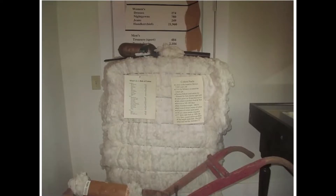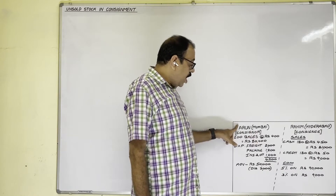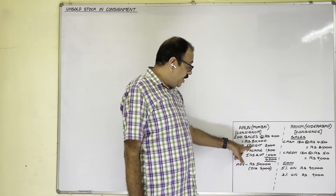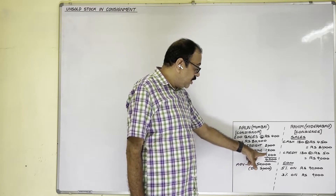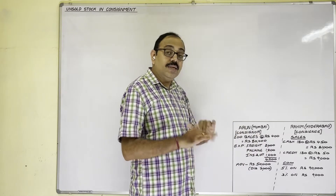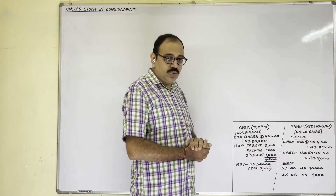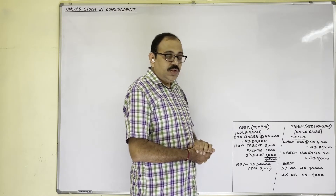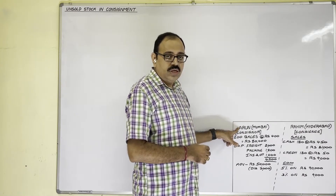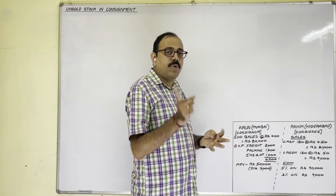A cotton bale means a large bundle or package prepared for shipping, storage, or sale — tightly compressed and secured by wires. One bale equals 2.18 quintals. To send these goods, Arun incurred: freight 2000 rupees, packing 1200, insurance and other expenses 1000 — total 4200 rupees. The consignor needs some advance from the consignee, which can be demanded in three forms: cheque, demand draft, or bill of exchange.